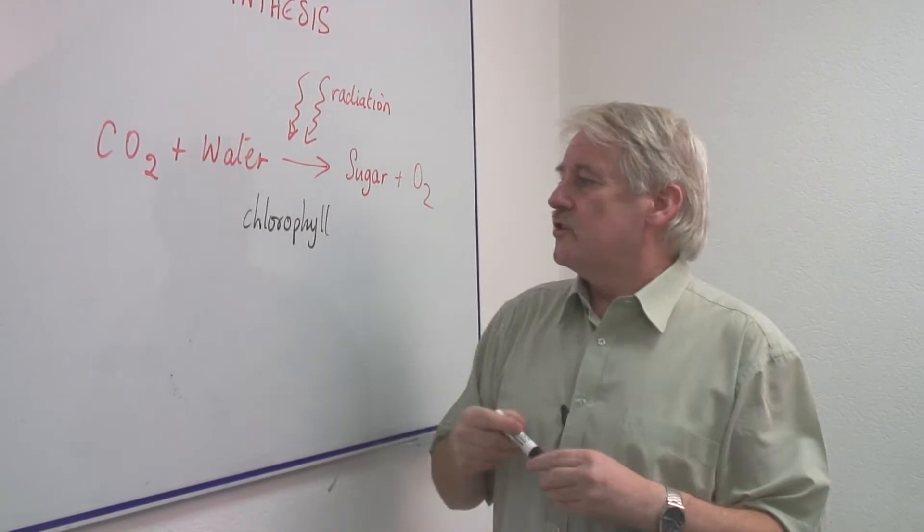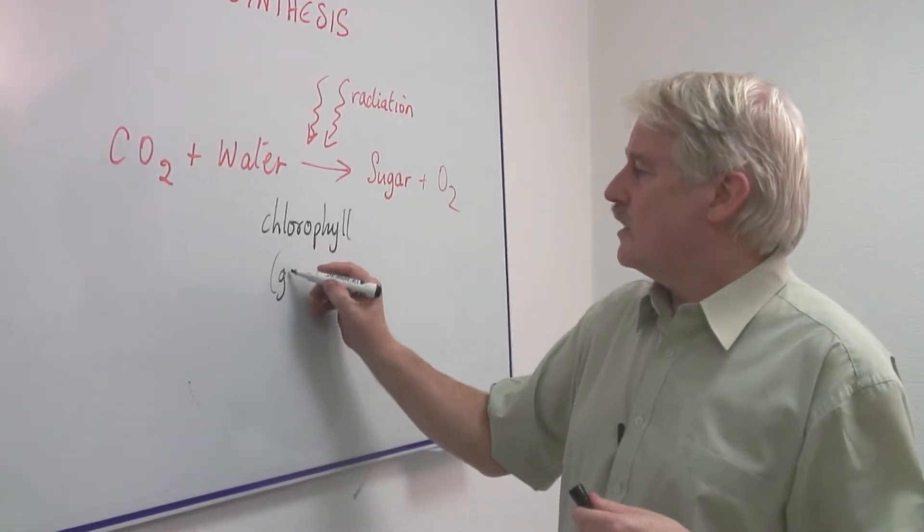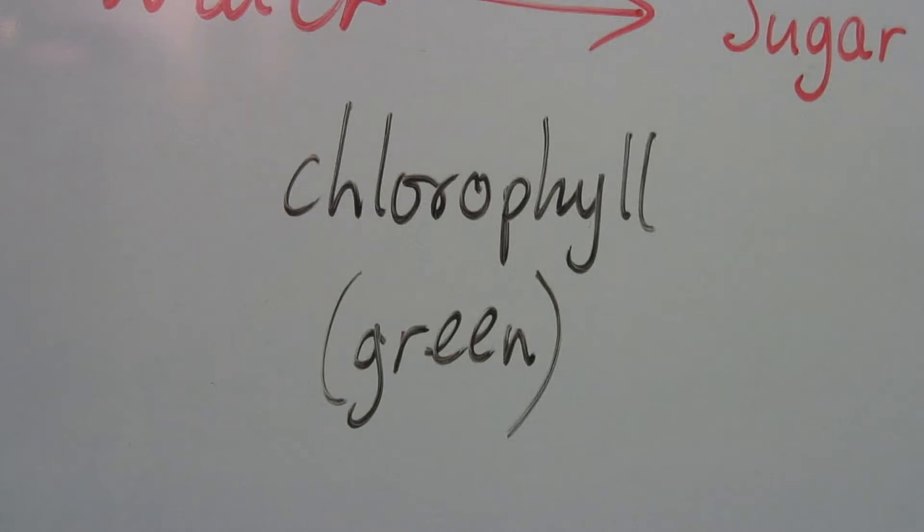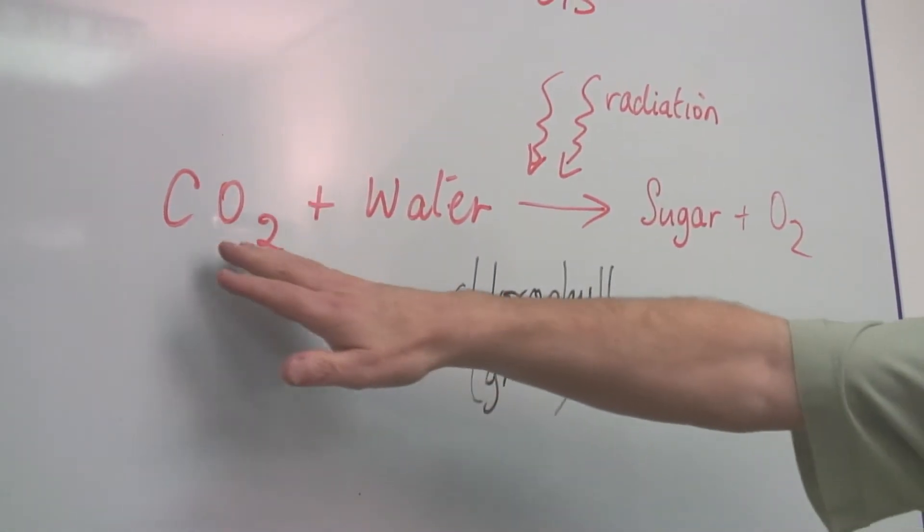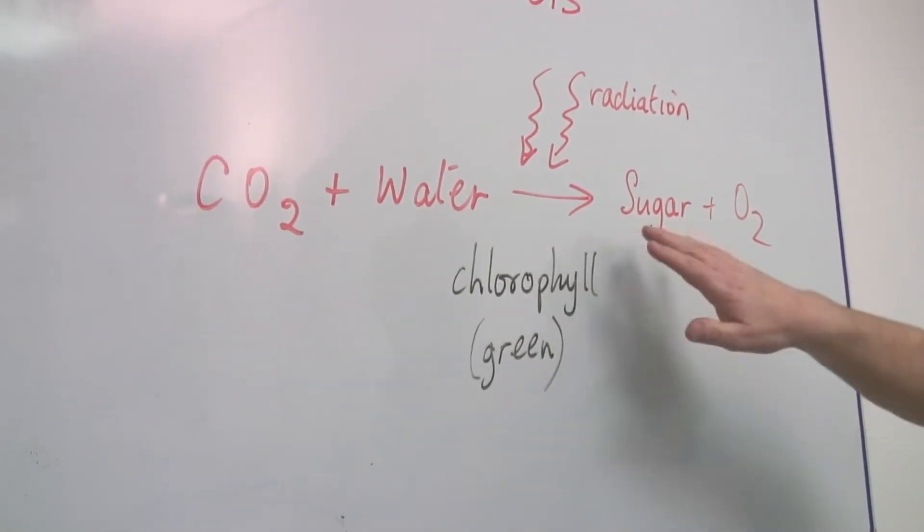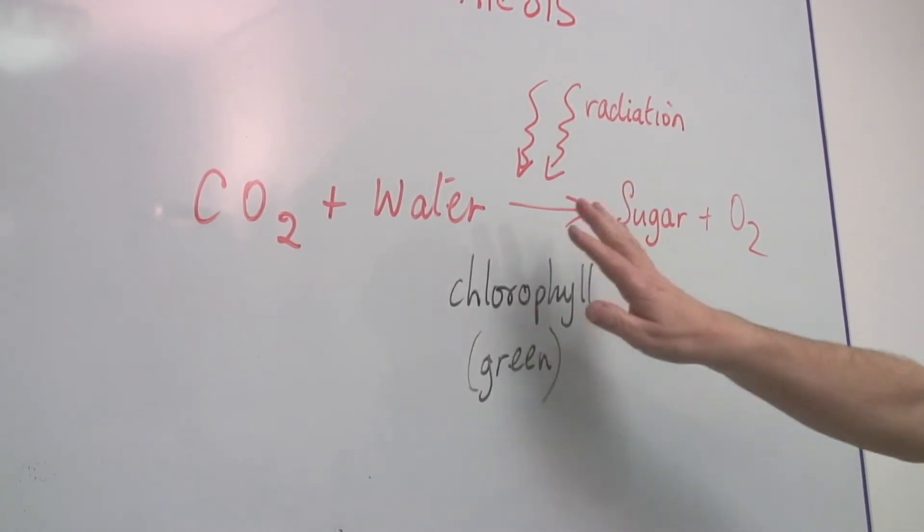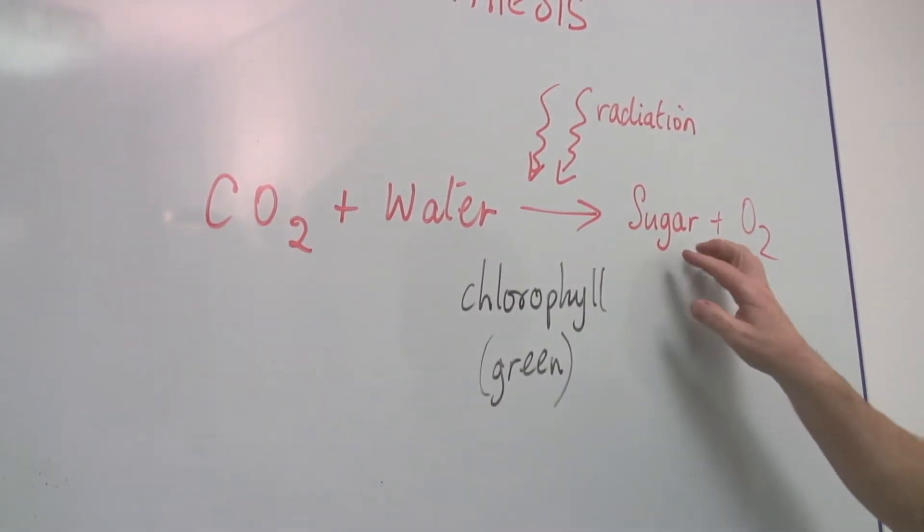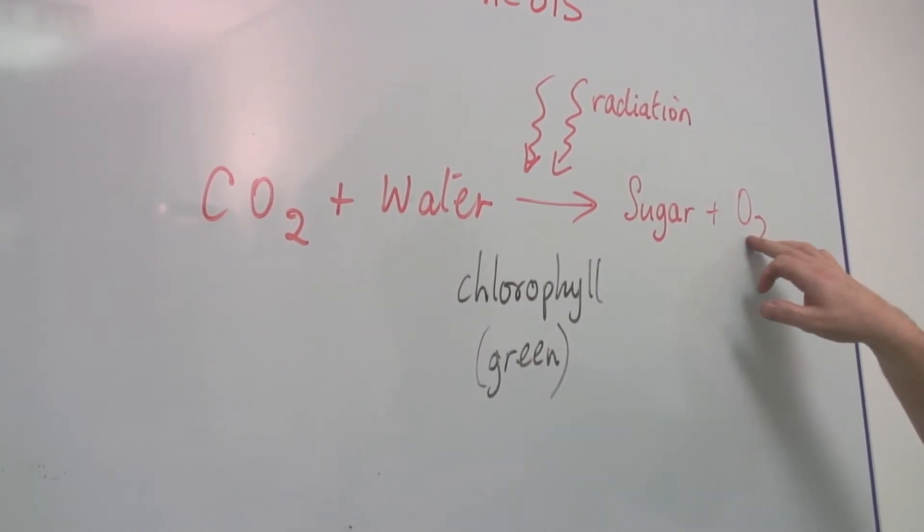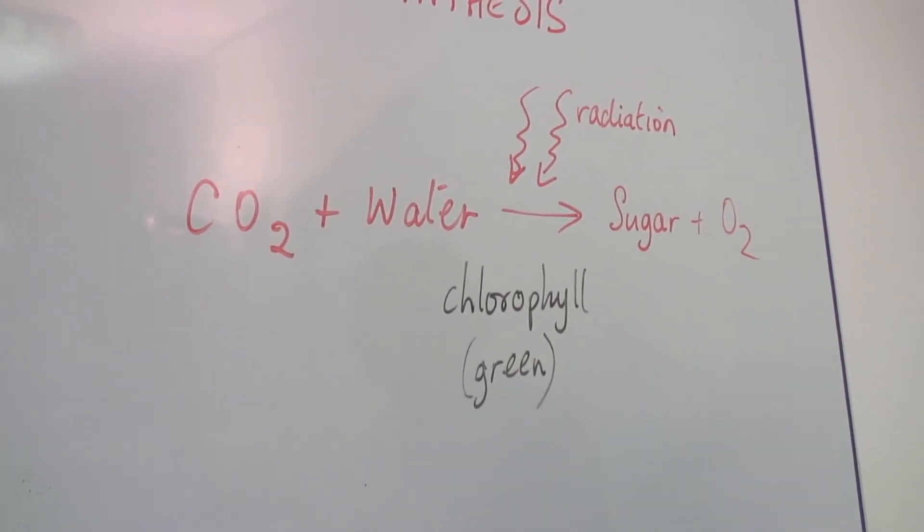In plants, the chlorophyll which is green in color absorbs the radiation from the sun and using the carbon dioxide from the air and the water, it undergoes a reaction and we end up with sugar which is the basis of our life and oxygen which is also very helpful for us too.